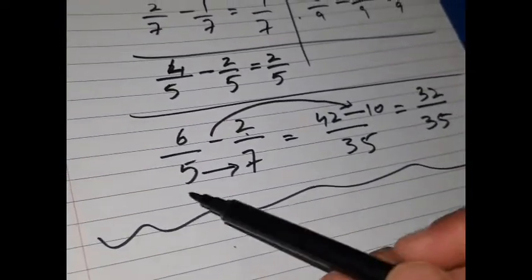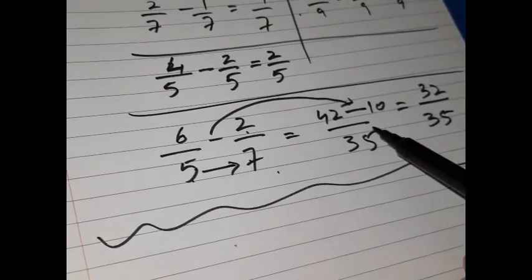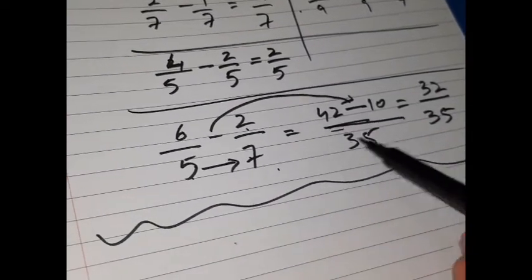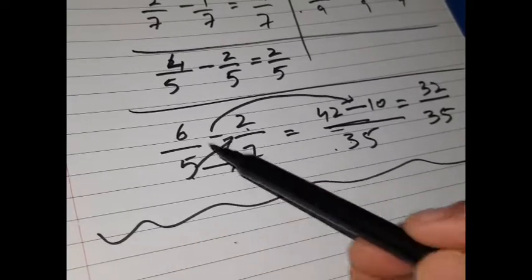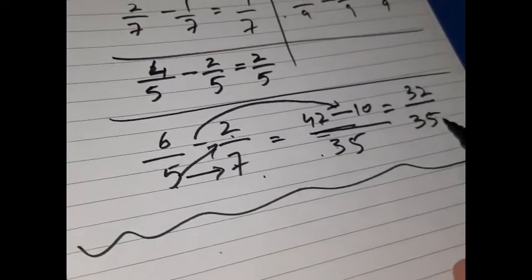Again, have a look at what I did here. I simply said multiply 5 with 7 and I drew the denominators line and I mentioned 35 there. Then I said cross multiplication: 5 times 2 is 10, 7 times 6 is 42. 42 minus 10, 32 over 35. That's my answer.